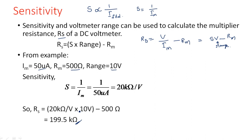Sensitivity of any voltmeter is defined as the reciprocal of the meter current. In the next lecture, we will see how to construct the multi-range voltmeter in shunt type and series type, as in the case of the ammeter.